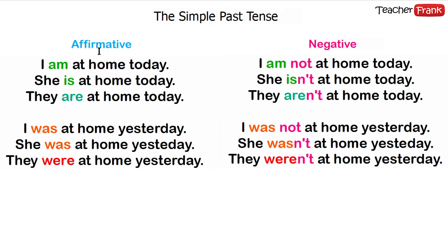Now, affirmative and negative with "to be". In the present: "I am at home today", "She is", "They are". Negative: "I am not at home today", "She is not" or "She isn't", "They are not" or "They aren't". In the simple past tense, you only change the verb: "I am" → "I was", "She was", or "They were". "Were" is for the plural form and "was" is for the singular form. Negative: "I was not", "She was not" or "She wasn't", "They weren't" — "were not" or abbreviated "weren't".